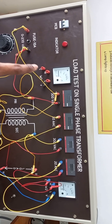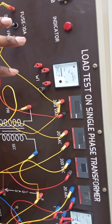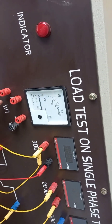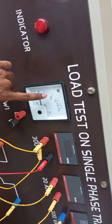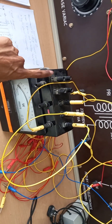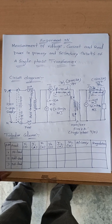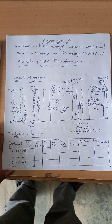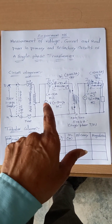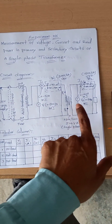In this panel we have already done a load test on a single phase transformer, and the same panel we are using here to measure voltage, current, and power at the primary side and the secondary side. As I mentioned in the previous experiment, the watt meter was somewhat damaged, so I have taken one extra external watt meter here for the primary side only. You remember the circuit diagram I have drawn: measurement of voltage, current, and real power in primary and secondary circuit of a single phase transformer. Compared to the load test, each and everything is the same — the only change is the voltmeter.